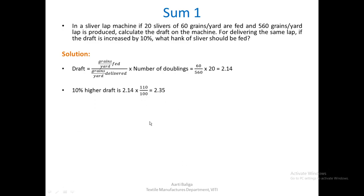The next part of the problem asks: for delivering the same lap, if the draft is increased by 10%, what hank of sliver should be fed? We calculate the 10% higher draft as 2.14 × (110/100) = 2.35.